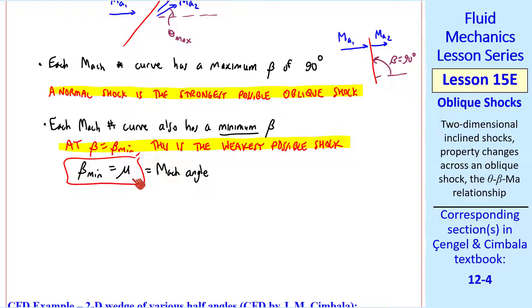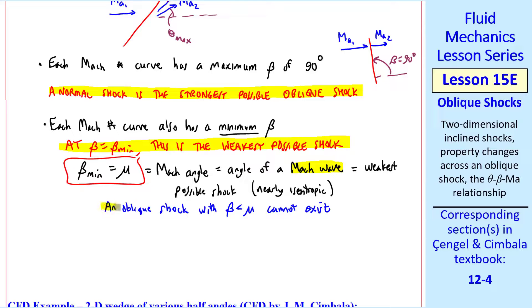In fact, it's nearly isentropic, like a sound wave. An oblique shock with beta less than mu cannot exist.